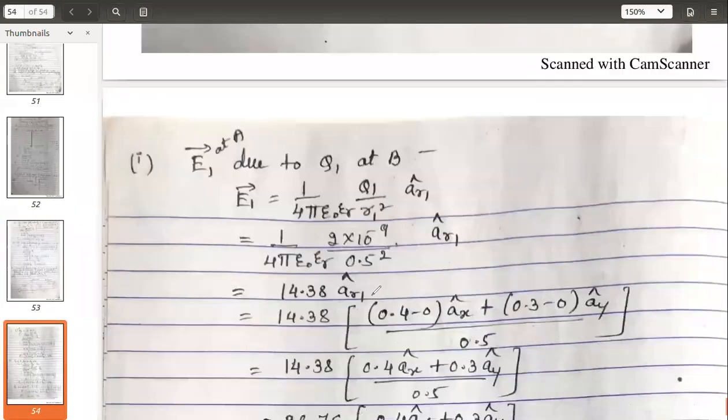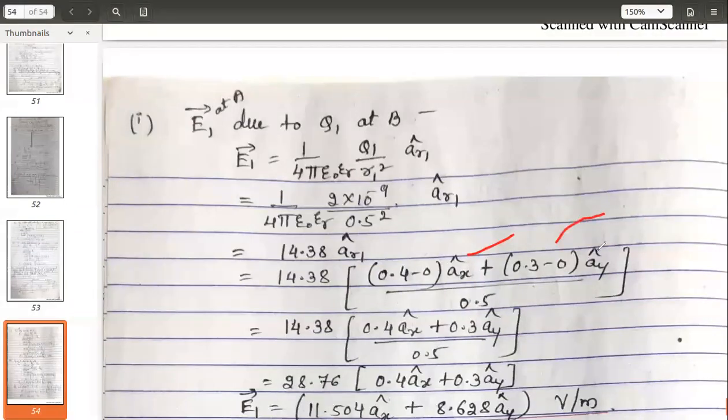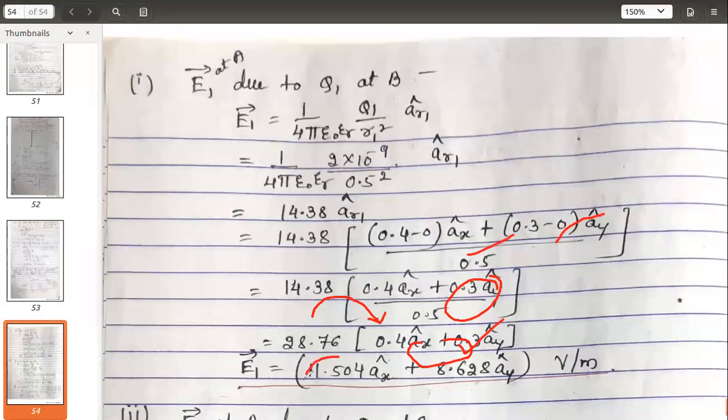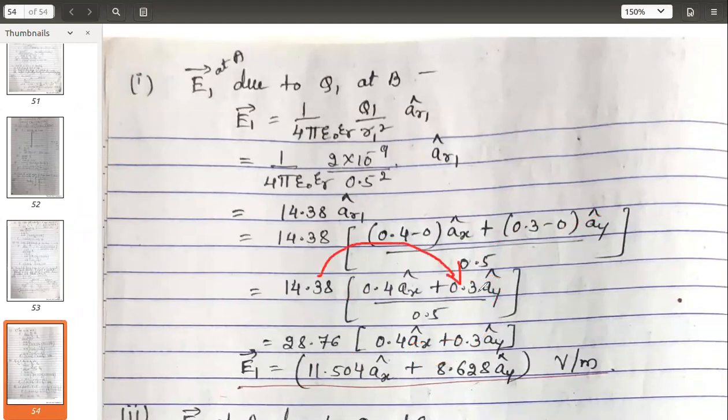I have found out the unit vector and the distance is already given to you: 0.5. Use these two. Here I have calculated the numerator part and the distance given is 0.5. Further is simplification. Multiply this with the coefficient of âₓ and divide it by 0.5, you will get the first term. In the same way, take this, multiply with the ây coefficient divided by 0.5, you will get the second term.